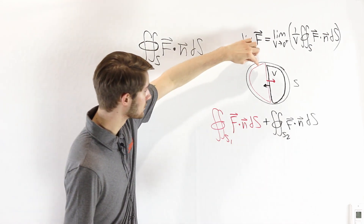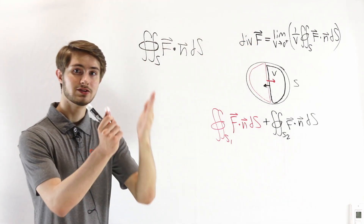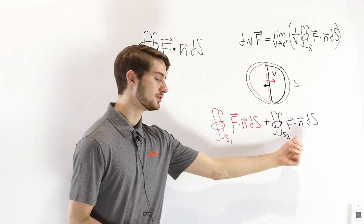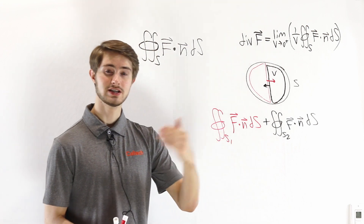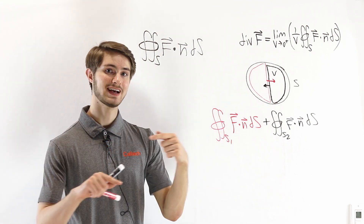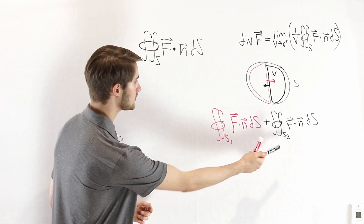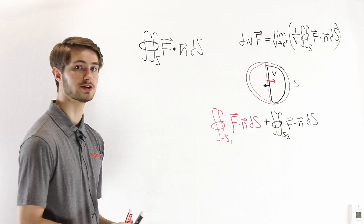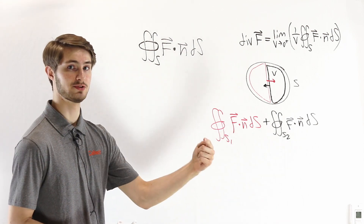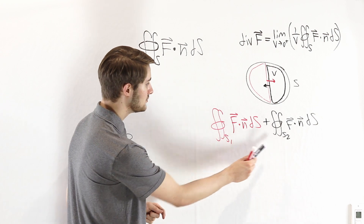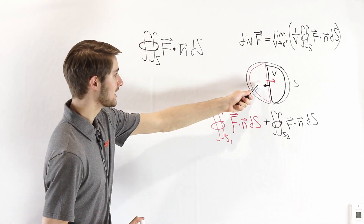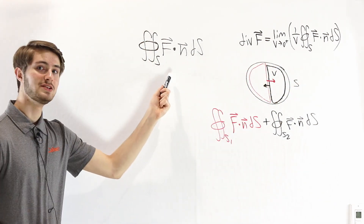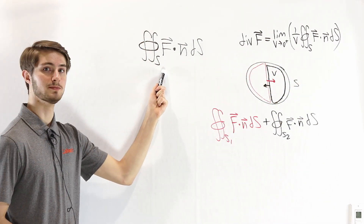When we take the surface integrals over the boundary that those two surfaces share, one of the integrals is going to give the negative of the other because their normal vectors point in exactly the opposite direction. So these two surface integrals cancel out in the middle. That means when we add these two surface integrals together, the middle cancels out and we're just integrating over the original surface — this sum is equal to the original surface integral.